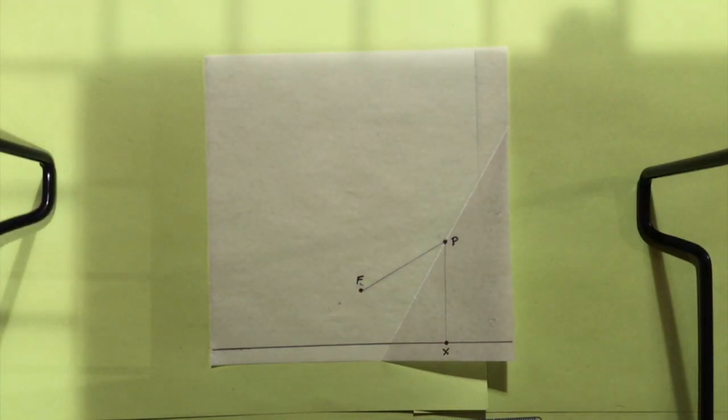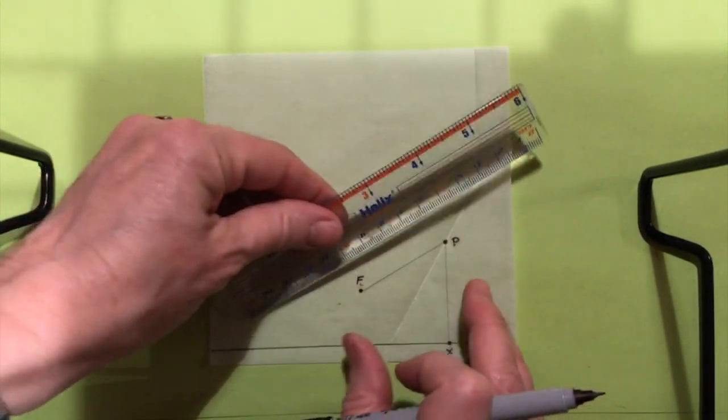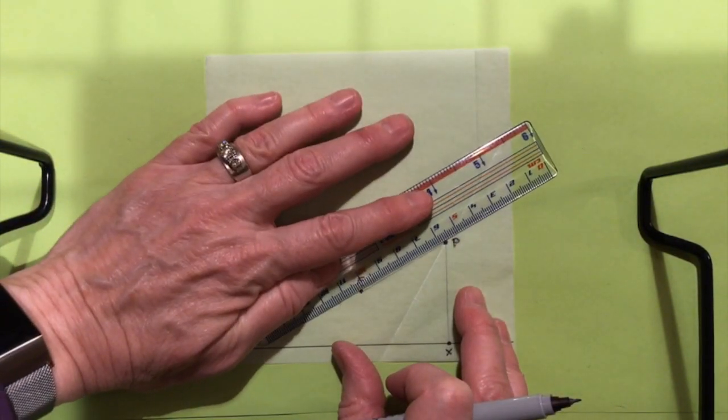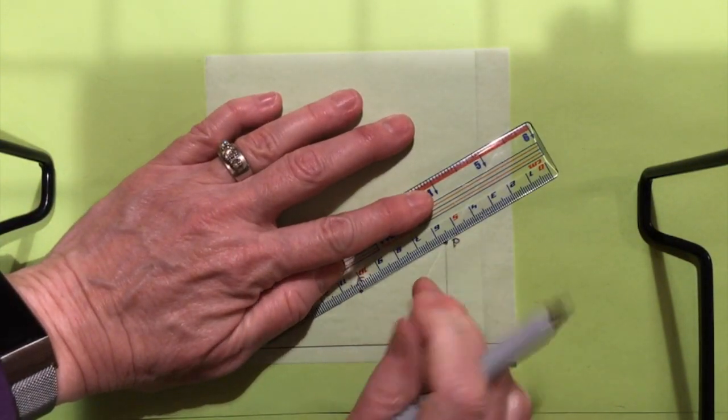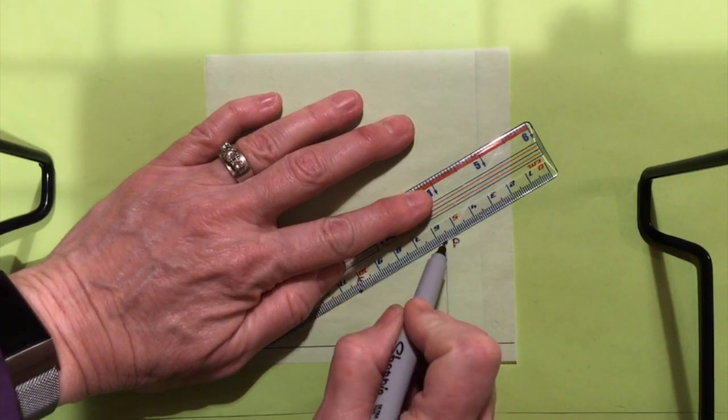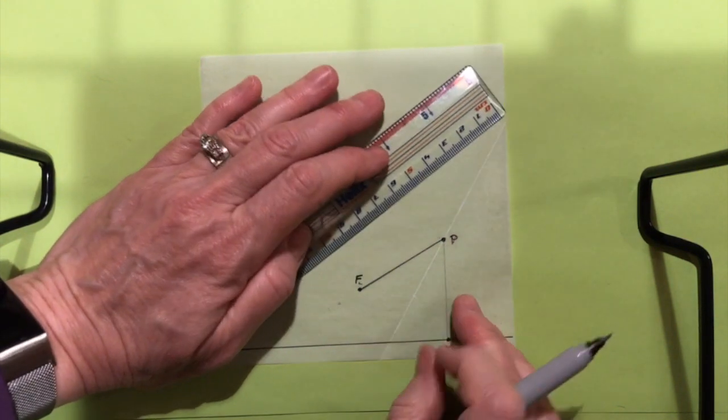And I'm going to darken the line segments. So it turns out that on this layer, we're darkening just about everything. I'm not going to draw over the crease, but everything else.